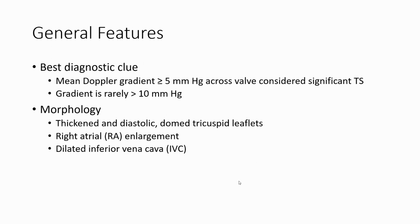The best tool to diagnose tricuspid stenosis is the mean Doppler gradient. A mean Doppler gradient of more than 5 mmHg across the valve is considered significant tricuspid stenosis. The gradient is rarely more than 10 mmHg.